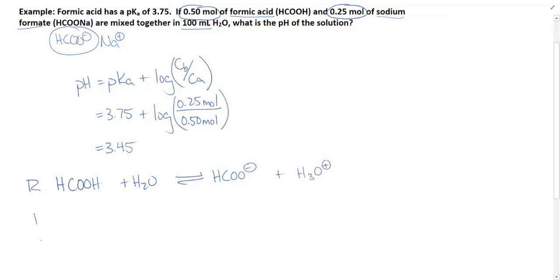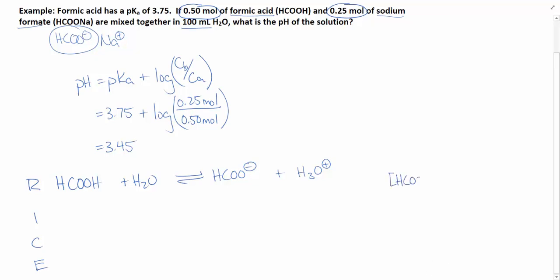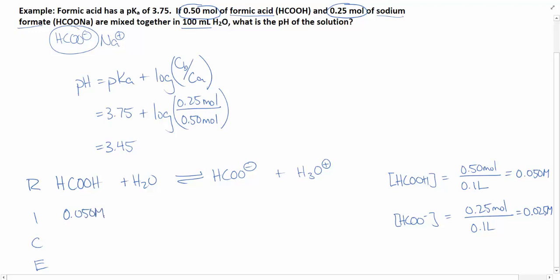So for our ICE table, we have the reaction, initial, change, and equilibrium. I'm going to use concentrations in my ICE table. So the concentration of acid is equal to 0.5 moles over 100 milliliters, which is 0.1 liters. So that is equal to 0.05 molar. The concentration of the base is equal to 0.25 moles per liter, which is equal to 0.025 molar. So our initial concentration of acid is 0.05 molar, and our initial concentration of formate is 0.025 molar.